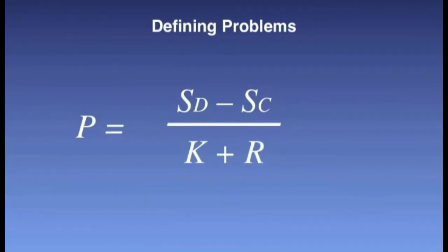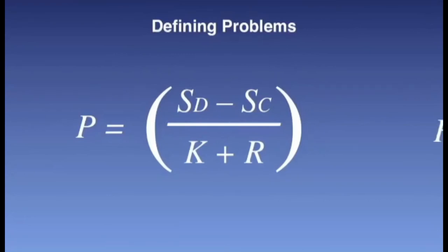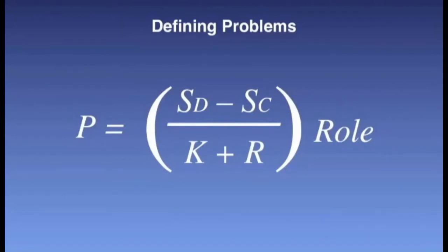Thus, if the learner has a great deal of knowledge and/or resources and knows how to apply these to the differential, the problem should be rather simple to solve. Finally, the role refers to the situatedness or contextual factors related to the potential problem solver, since the role determines the background and type of perspective brought to bear on the problem. Several scenarios will further describe how this equation actually works in reality.